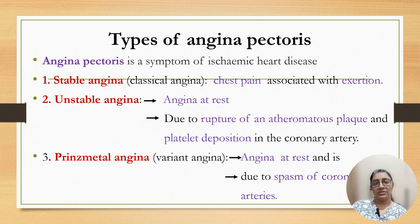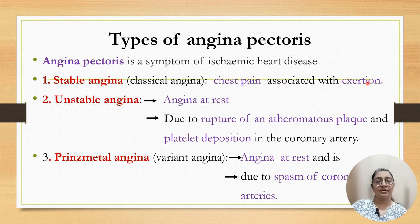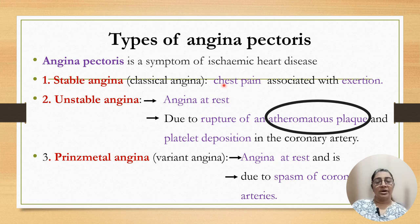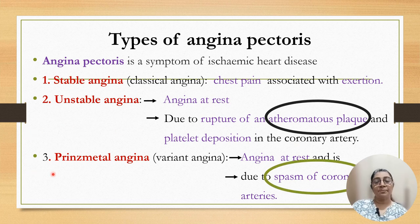Now, types of angina pectoris. There are three types according to symptoms of ischemic heart disease. First is stable angina or classical angina — chest pain associated with exertion. If exercise precipitates pain, it may be due to stable angina. The second is unstable angina, which is precipitated at rest; its pathophysiology involves rupture of an atheromatous plaque and platelet deposition in the coronary vessel. The third is Prinzmetal or variant angina, which also occurs at rest and its pathophysiology is due to spasm of the coronary arteries.